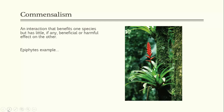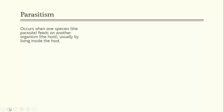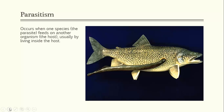Parasitism occurs when one species — the parasite — feeds on another organism called the host, usually by living inside or on it. The blood-sucking sea lamprey attached to an adult lake trout is one example: the trout is harmed while the lamprey benefits. Another example is the relationship between fleas and dogs — the fleas benefit while the dogs are harmed.